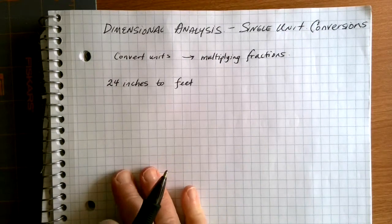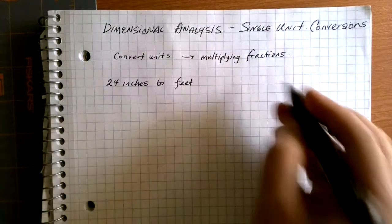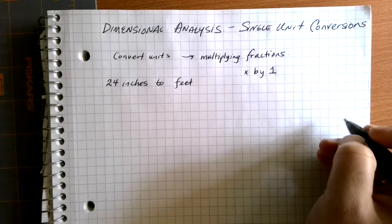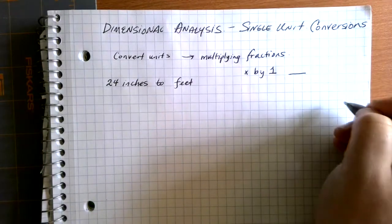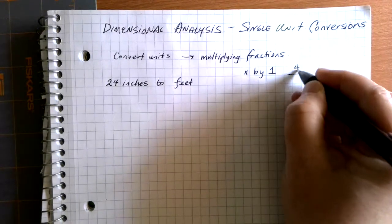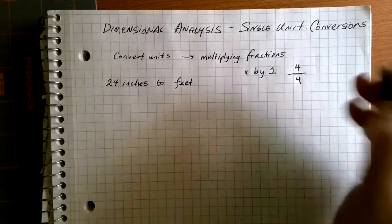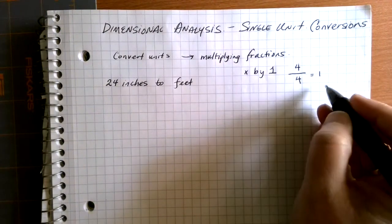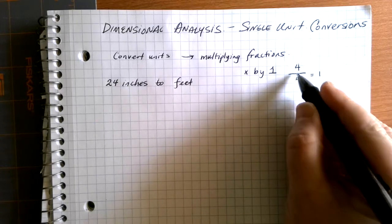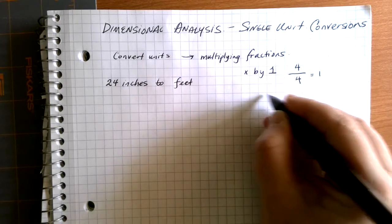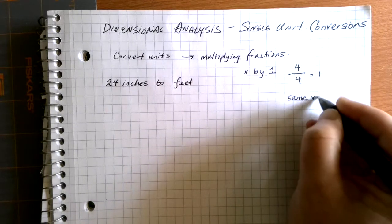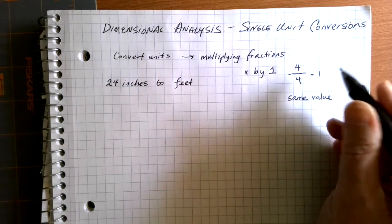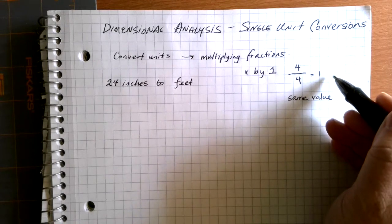When we do dimensional analysis, what we're essentially going to be doing is multiplying by one — but in a really clever way. We're going to multiply by a fraction that is equal to one. Normally, four divided by four equals one, so multiplying by four over four wouldn't change anything. When doing unit conversions, we can have things with the same value on top and bottom — just like four over four simplifies to one — so we can think of it as multiplying by one without changing the original problem.